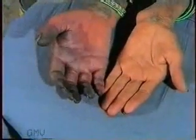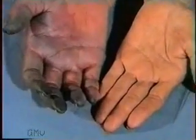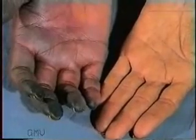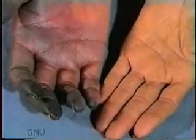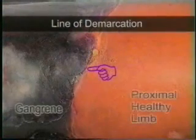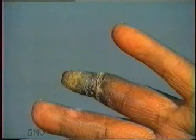A wet gangrene, as seen in the fingers of the right hand, shows black discoloration but the tissues are edematous and swollen and there is no clear-cut demarcation between the gangrenous and the normal limb. In comparison, the dry gangrene shows a line of demarcation between the dead gangrenous part and the normal living limb, as seen in this leg. Note the well-differentiated line of demarcation between the gangrene and the proximal healthy tissue in this dry gangrene of the finger.